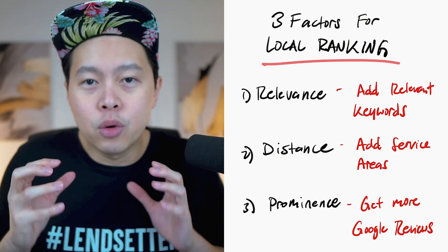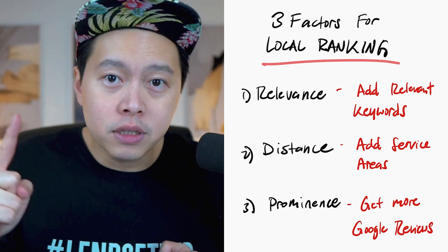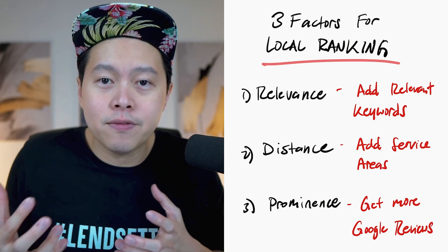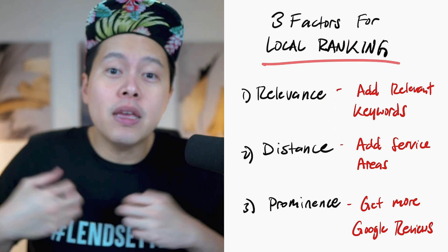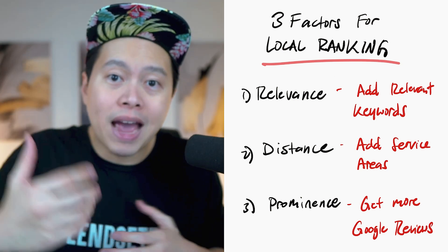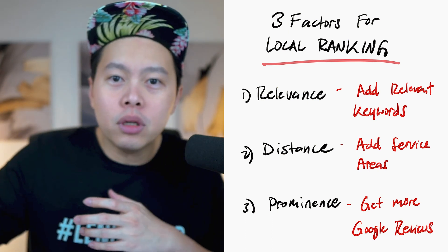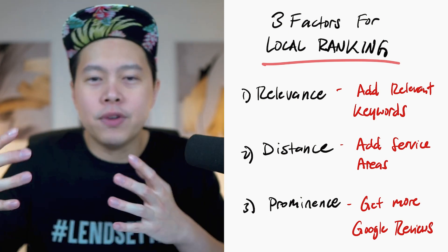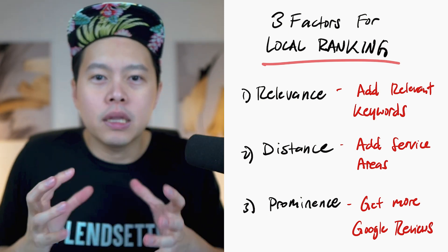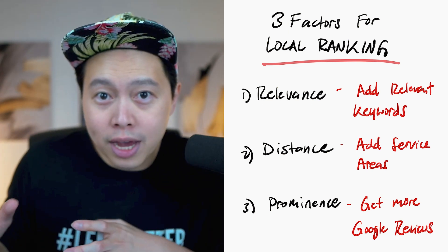Let's talk about tapping into Google's traffic. Google says there are three factors they take into consideration. First is relevance — Google's mission is to serve the customer by giving the most relevant search result. For you as a loan officer, our goal is to use keywords that tell Google what you do, depending on your products. For example, if you are a VA loan officer, there are a lot of relevant keywords we can leverage.